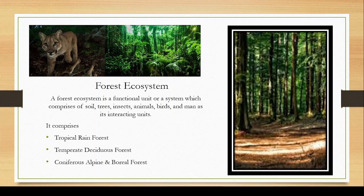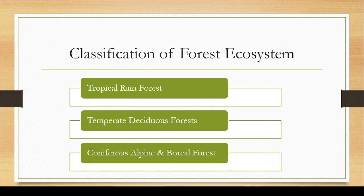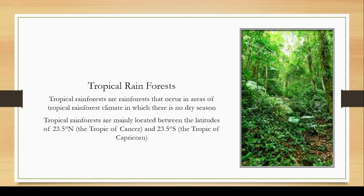The forest ecosystem has the following three categories, these are the classifications in which a forest system is categorized: tropical rainforest, temperate deciduous forest, and coniferous alpine and boreal forest.